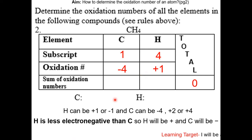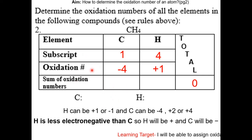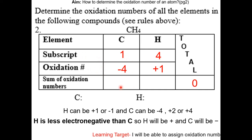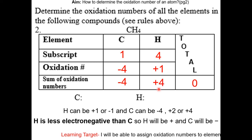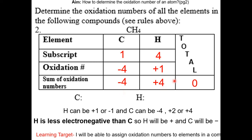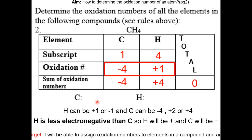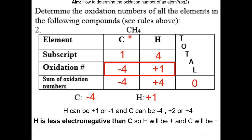To check our answer, we multiply the subscript by the oxidation number for each element. For carbon: 1 × (−4) = −4. For hydrogen: 4 × (+1) = +4. The sum is zero, which confirms our answer. So carbon has a −4 oxidation number and hydrogen has a +1 oxidation number in CH4.